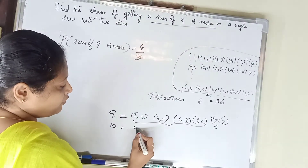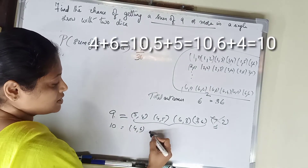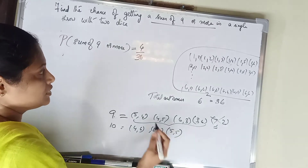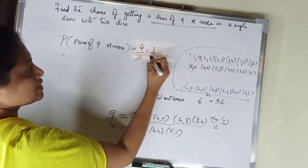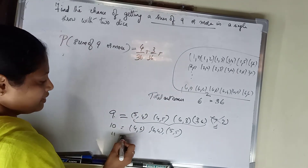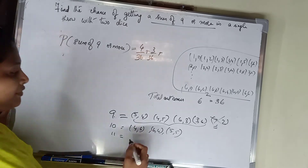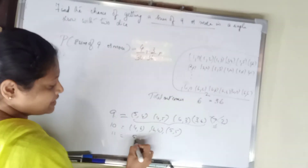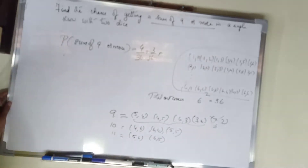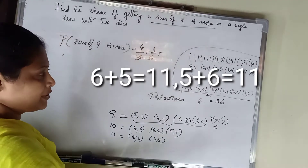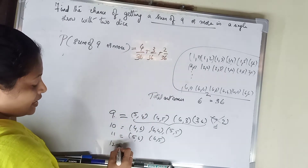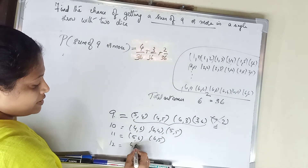For sum of 9: 4 ways. For sum of 10: (4,6), (5,5), (6,4) — that is 3 ways. For sum of 11: (5,6), (6,5) — that is 2 ways. For sum of 12: (6,6) — that is 1 way. So the total is 4 plus 3 plus 2 plus 1.